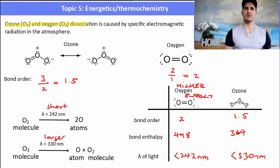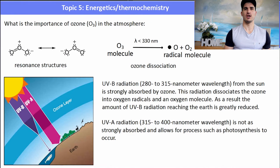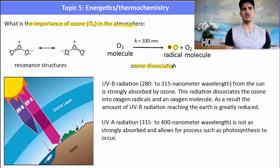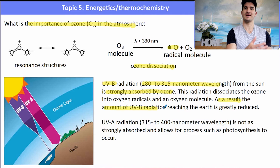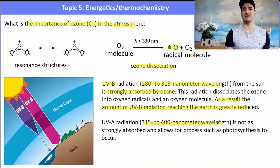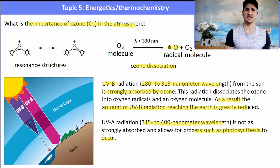Ozone is very good at absorbing UVB radiation — that is radiation between 280 and 315 nm — which helps reduce the amount of UVB reaching Earth's surface. However, it does not block UVA radiation, allowing UVA to pass through and support photosynthetic processes. UVB, which ozone absorbs, is harmful and damaging to both cells and people, so it is important that ozone remains in the atmosphere to absorb that radiation.